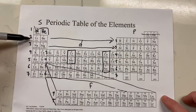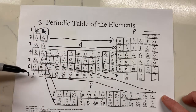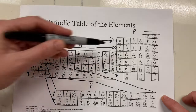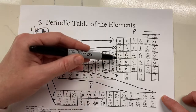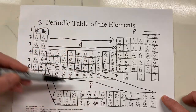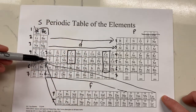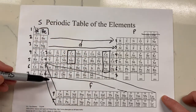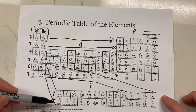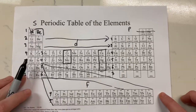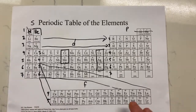You label 1, 2, 3, 4, 5, 6, 7 for the S block; 2, 3, 4, 5, 6, 7 for P; 3, 4, 5, 6, 7 for D; and 4, 5 for F. And once you've done that, you've set yourself up pretty well.